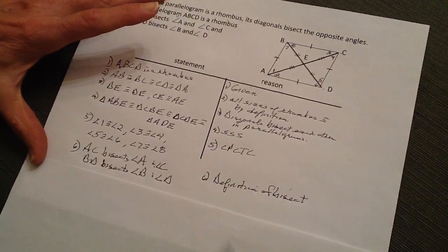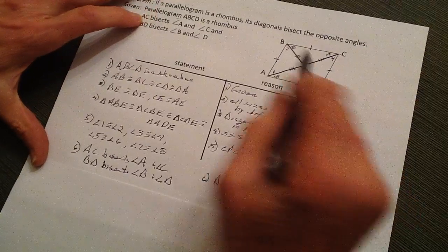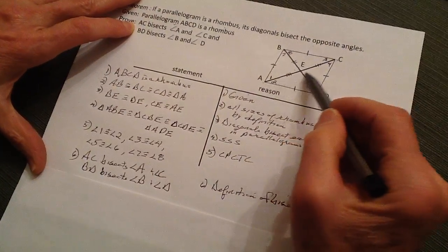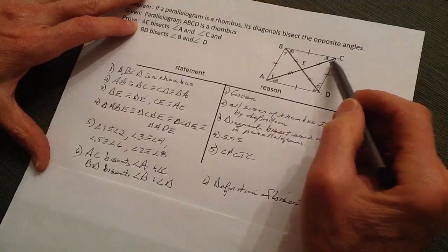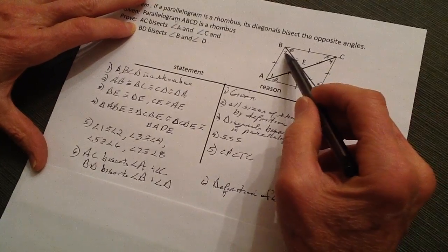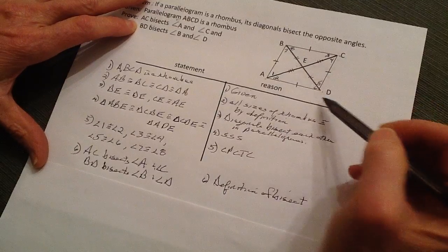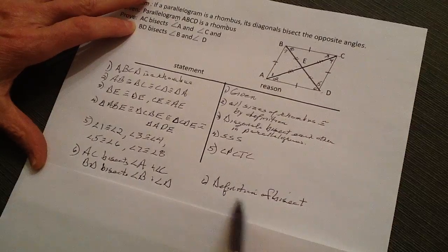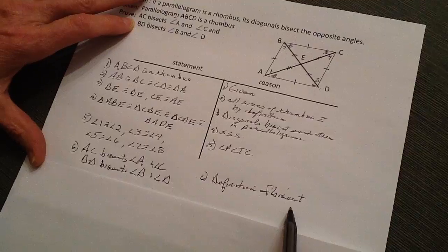Therefore, by definition, AC, this line right here, bisects angle A and C, and BD bisects B and D. That's done by the definition of bisect.